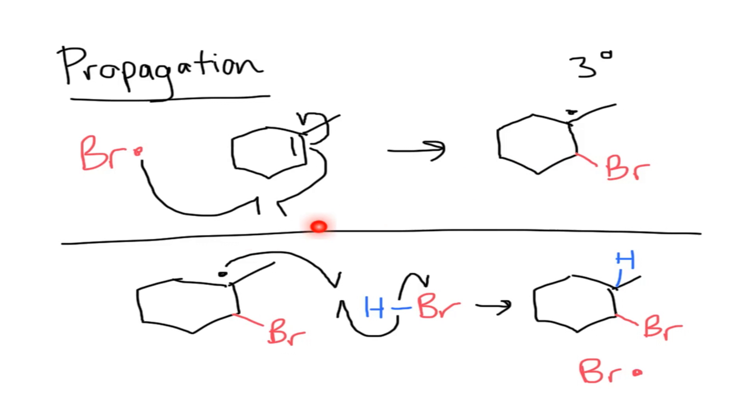Next you go down here to take that exact same radical. That's going to react with another HBr to essentially finish up the reaction. Your product is formed after the propagation step.